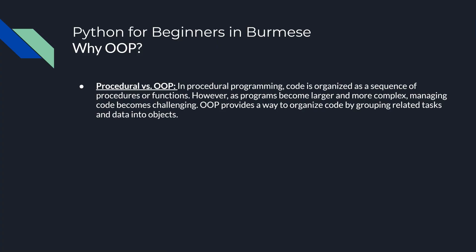Why OOP? Let's check Procedural versus OOP. In procedural programming, code is organized as a sequence of procedures and functions. However, as a program becomes larger and more complex, managing code becomes challenging. OOP provides a way to organize code by grouping related tasks and data into objects.